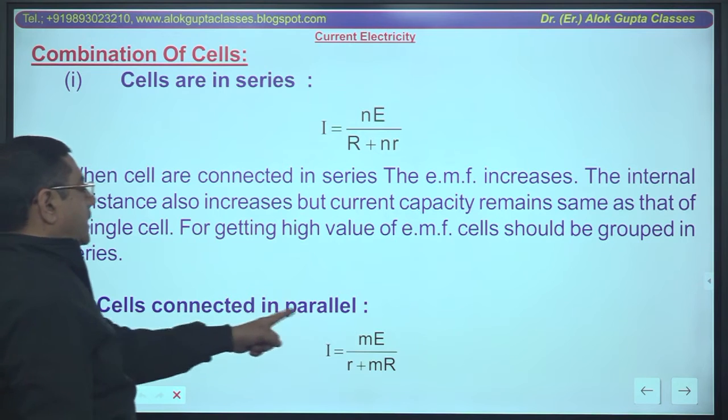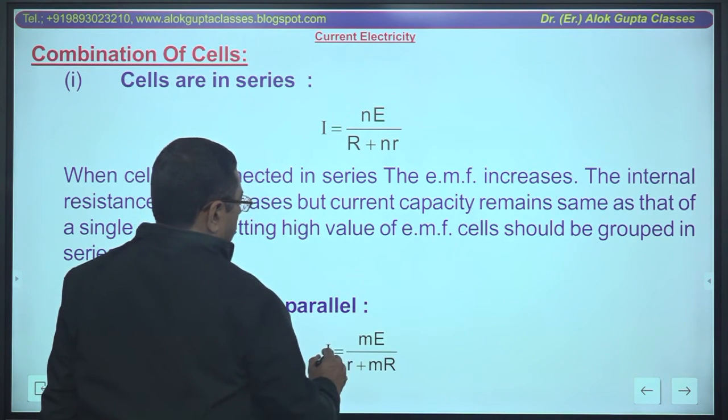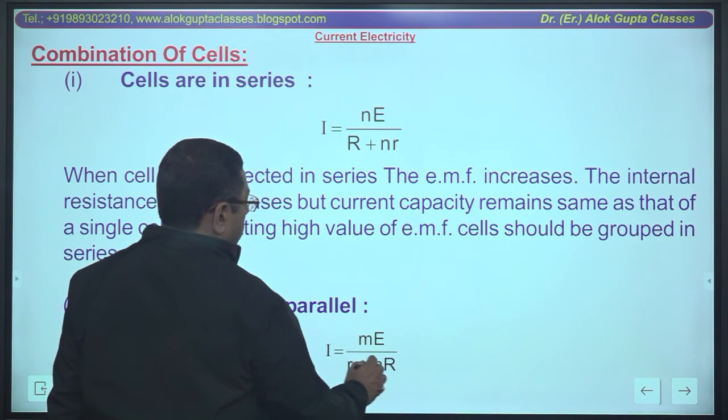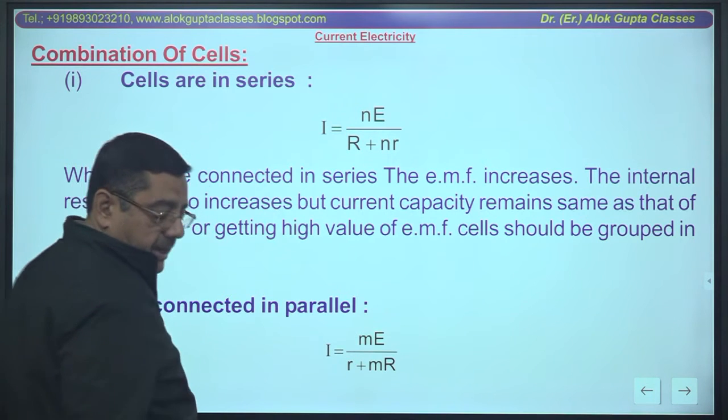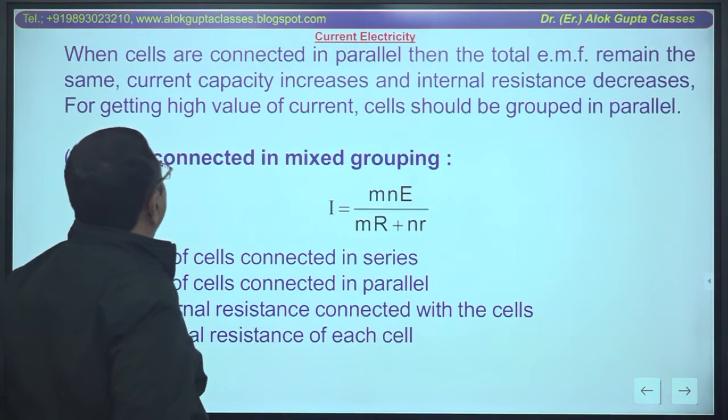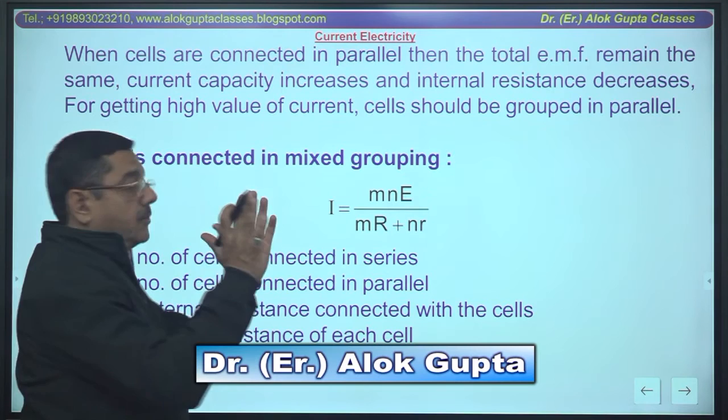Cells connected in parallel: m cells when connected in parallel, current flowing in the external resistance is mE upon r plus mR. When cells are connected in parallel, then the total emf remains same. Total emf remains same.